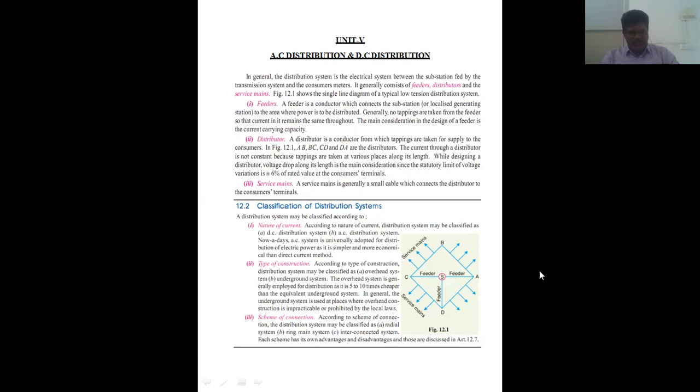According to scheme of connection, the distribution system may be classified as radial system, ring main system, and interconnected system. Each system has its own advantages which are discussed further.